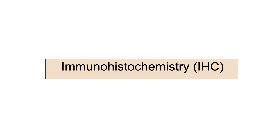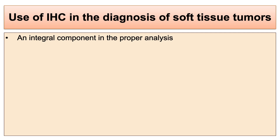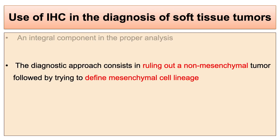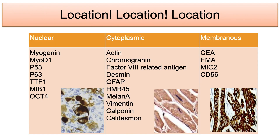Immunohistochemistry is an integral component in the proper analysis of soft tissue tumors. The diagnostic approach consists of ruling out non-mesenchymal tumors, followed by trying to define mesenchymal cell lineage. It is best used as a diagnostic adjunct after careful assessment of histopathology and formulation of a differential diagnosis.